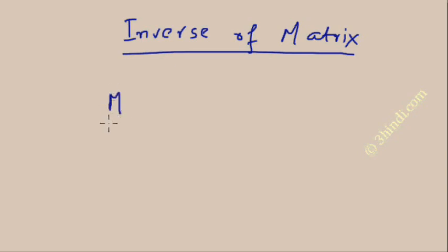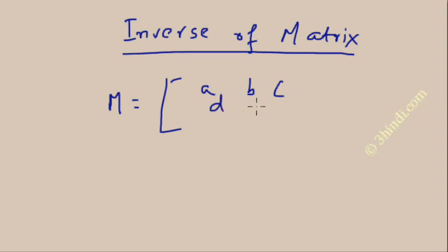Suppose a matrix M has elements A, B, C, D, E, F, G, H, I — a 3×3 matrix.